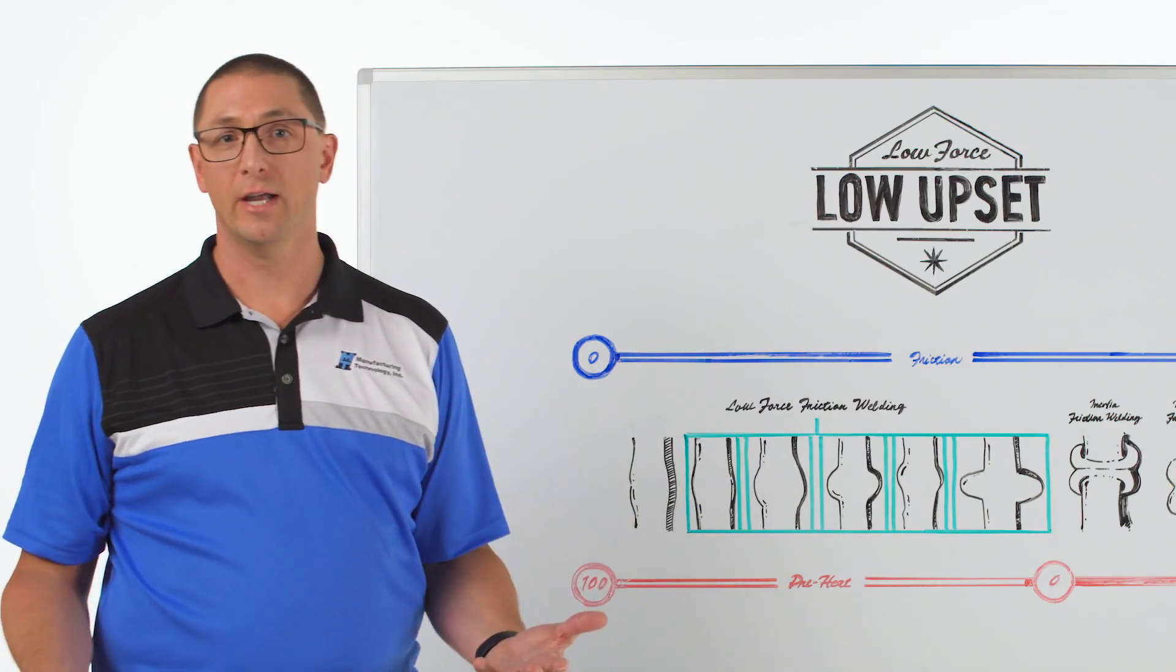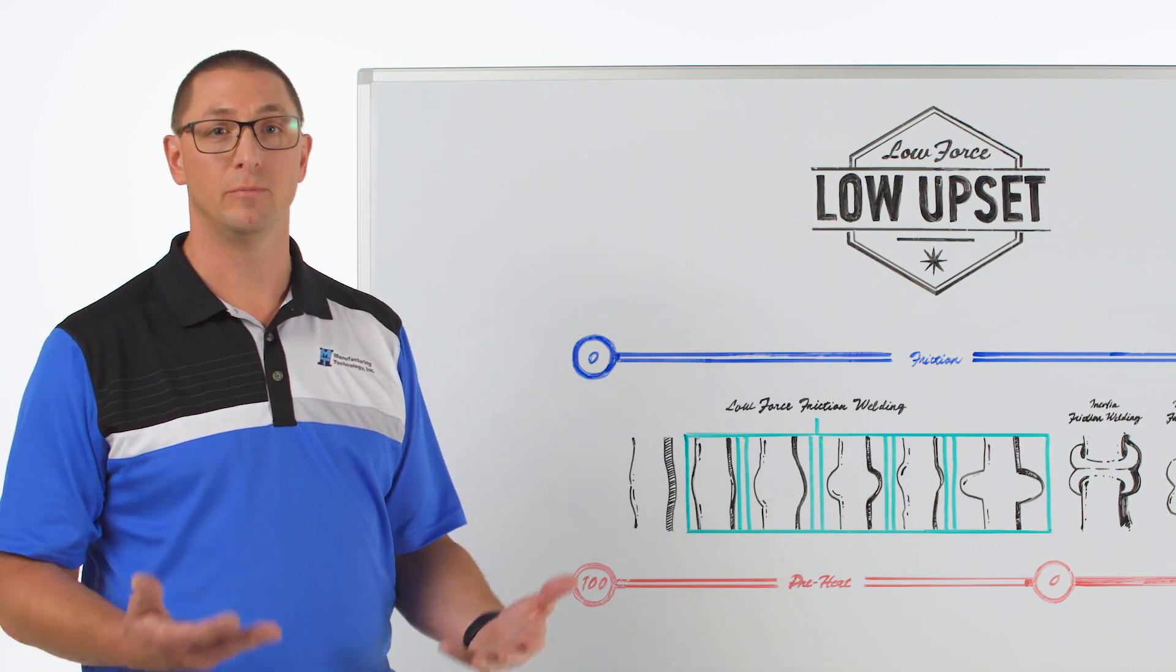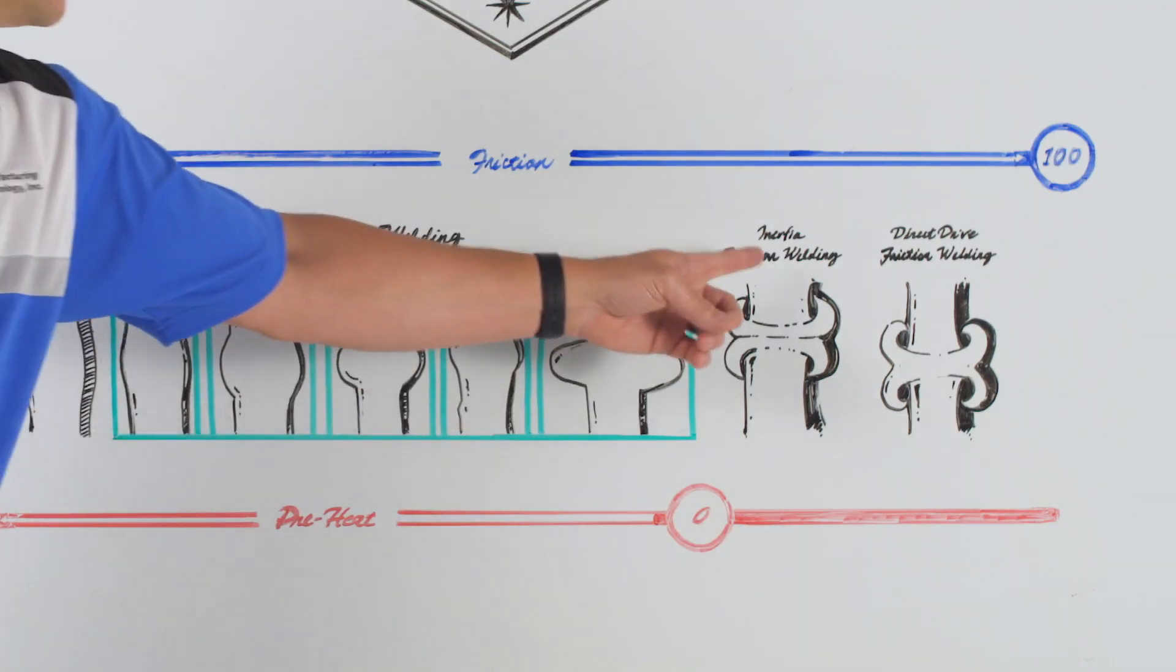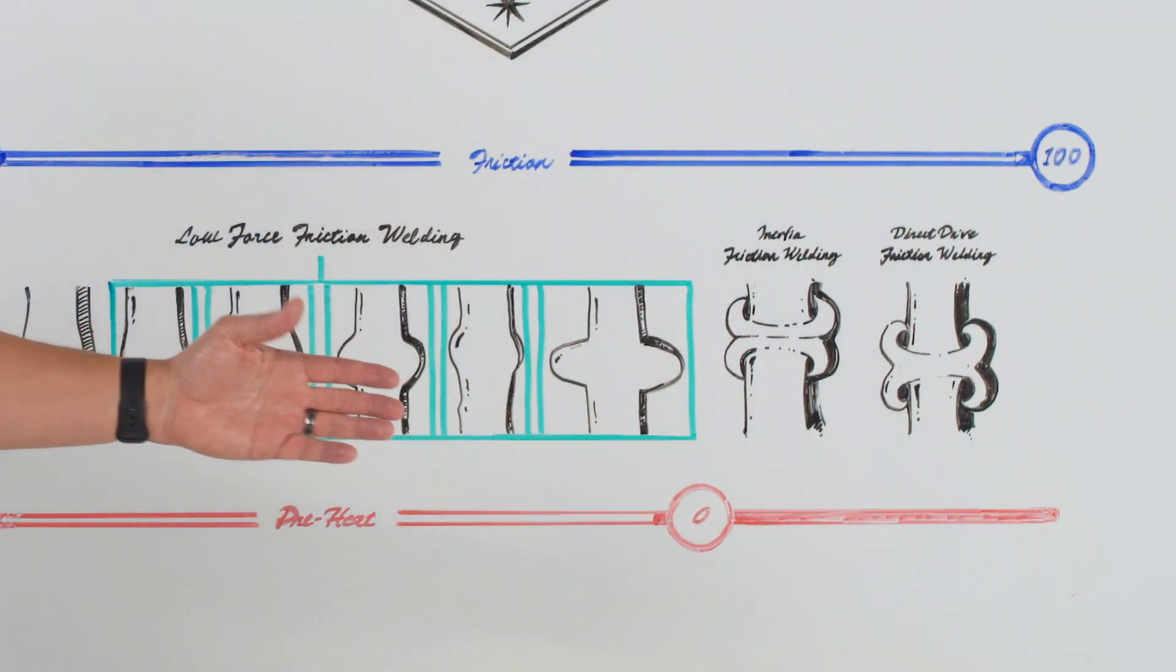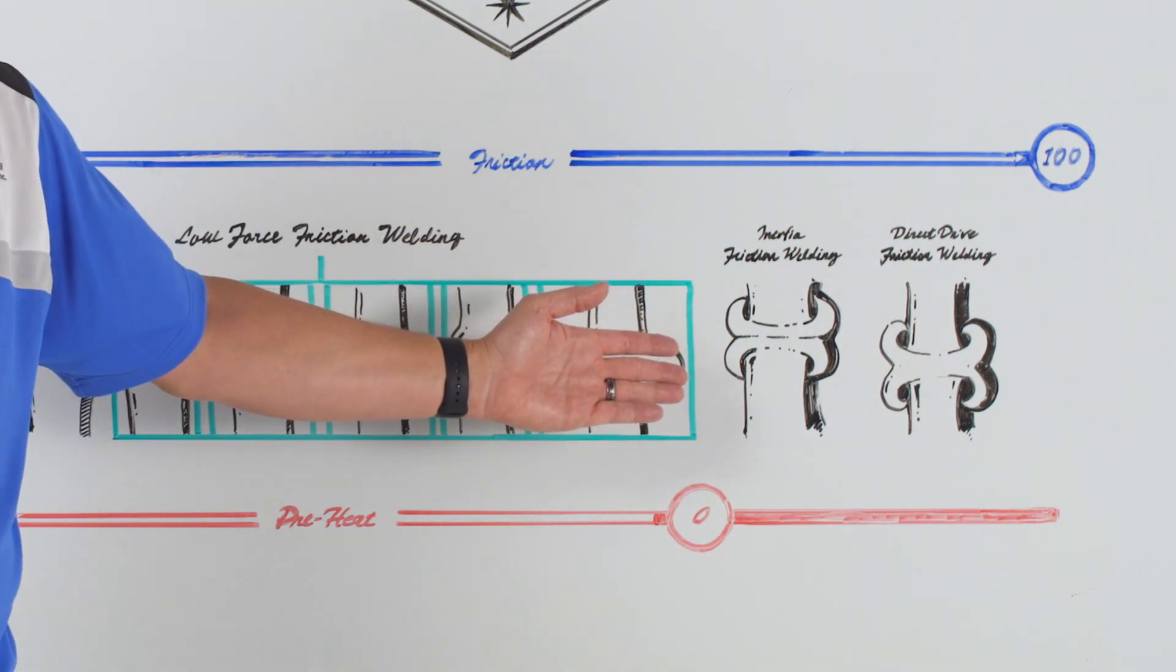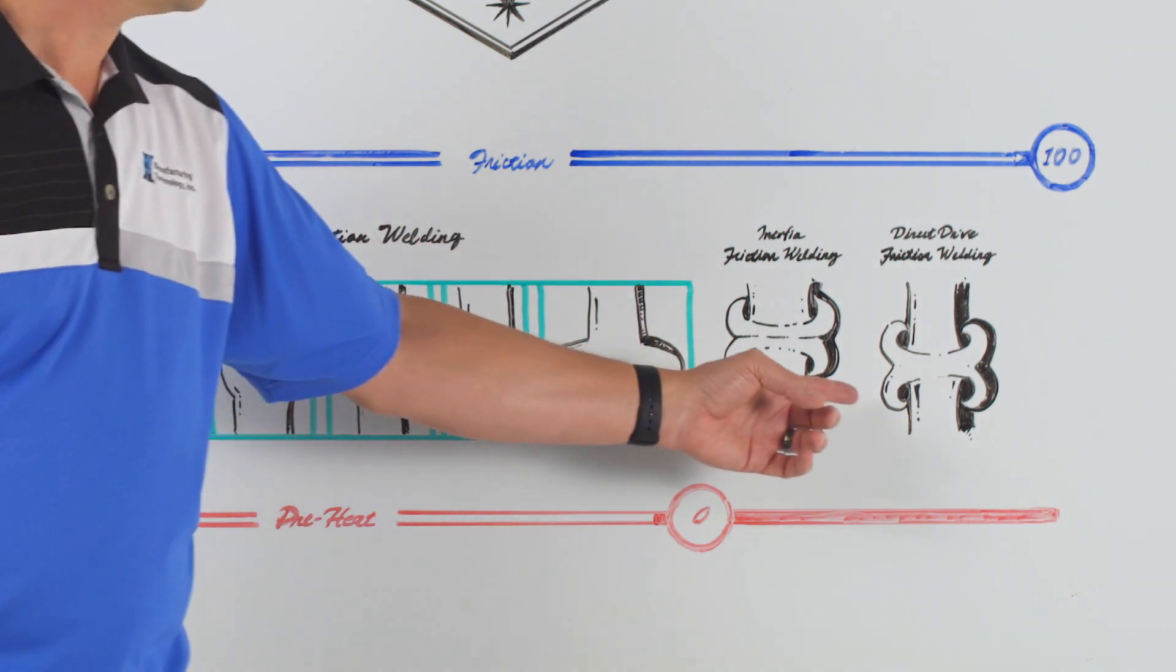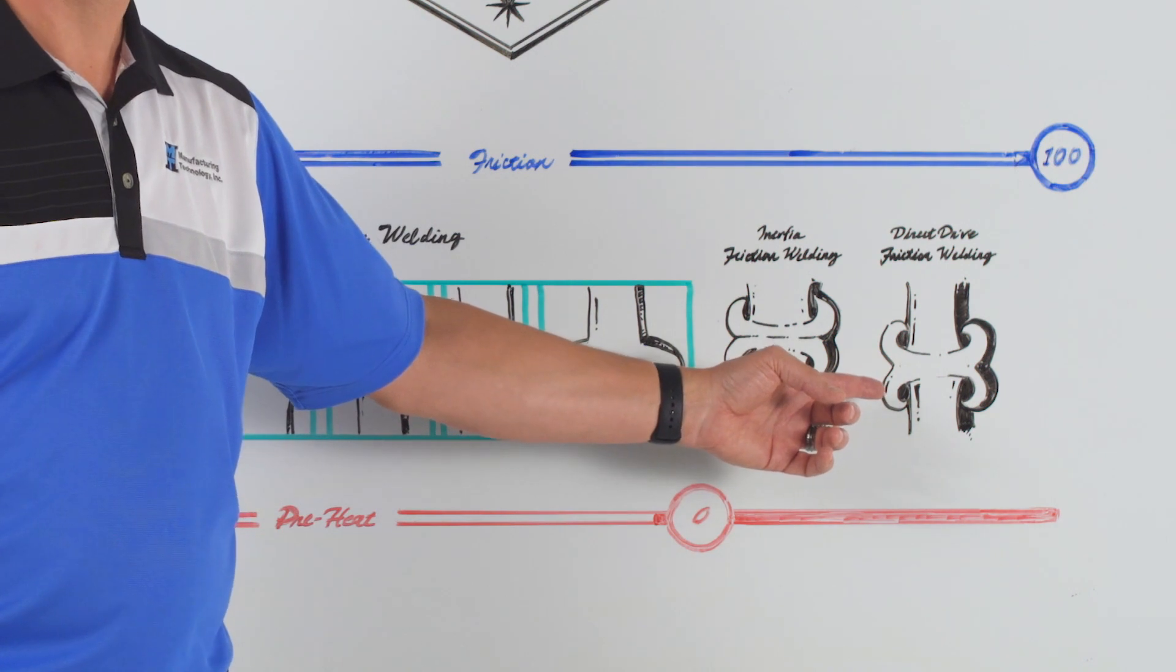So the problem that this creates for users is if you need to remove this flash, if we could imagine that this is the wall of a tube, we need to possibly remove the OD and the ID flash. This flash curl presents a really difficult challenge.